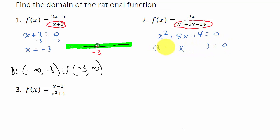I get x plus 7 times x minus 2. So x plus 7 equals 0 or x minus 2 equals 0. Subtract 7 from both sides, I get x equals negative 7, or add 2 to both sides, I get x equals 2. So x cannot be negative 7 or positive 2.